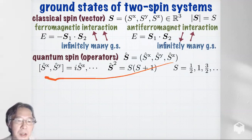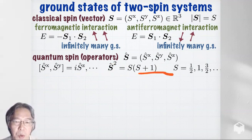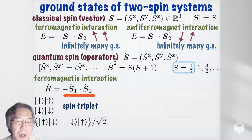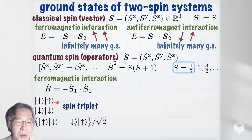Quantum spin is a vector that consists of three operators, and they satisfy the familiar commutation relation. S squared is S times S plus one, where S is the spin quantum number. Setting S equal to one-half and looking at the ferromagnetic Hamiltonian for two spins — the same form but now as an operator — the ground state is given by the spin triplets. The ground states are threefold degenerate, and you can take any linear combination, so there are infinitely many ground states again.